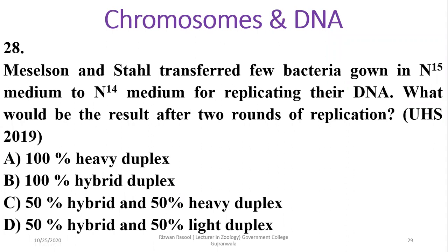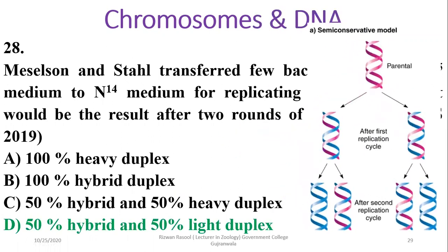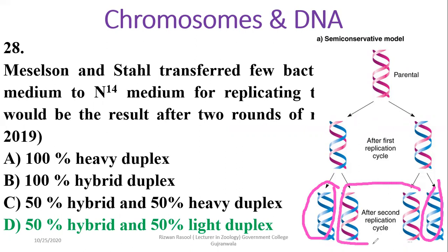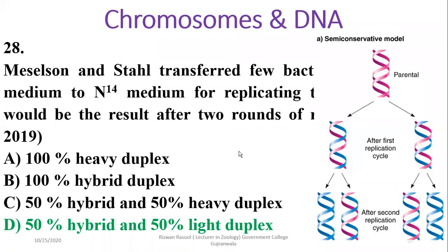Question 28 (Meselson-Stahl): A few bacteria grown in N-15 medium were transferred to N-14 medium for DNA replication. After two rounds of replication, 50% hybrids and 50% light duplex were observed. If parental DNA is shown in purple and daughter DNA in blue, after two rounds half the DNA is the new light duplex and half is the mixed hybrid type. The right option is delta.